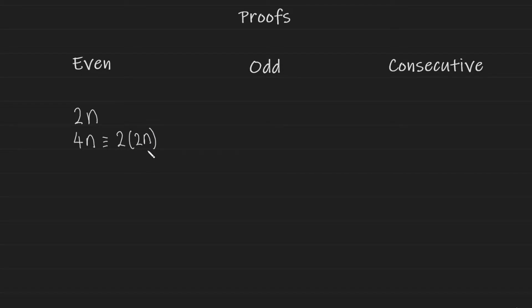So this is 2 multiplied by 2n. You always want to show that whichever number you're dealing with, or whichever value you're dealing with, it is a multiple of 2. If you can show that something is a multiple of 2, you have shown that it is even.